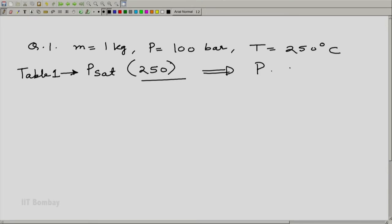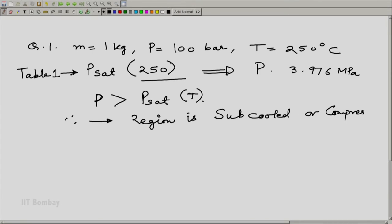P_sat equals 3.976 MPa, which is obviously less than our P which is 10 MPa. P given is more than P_sat_T because P given is 10 MPa, and therefore we can say that the region is subcooled region, subcooled or compressed region, compressed liquid region or zone.